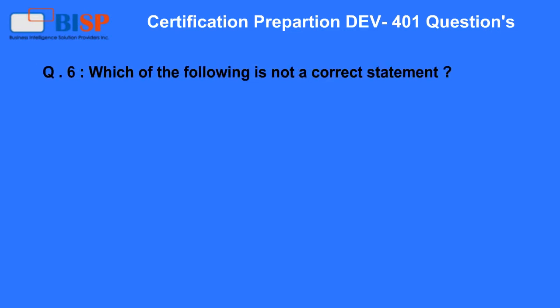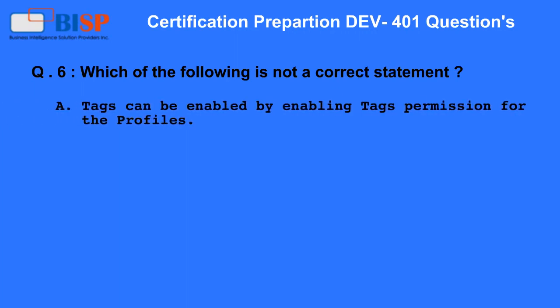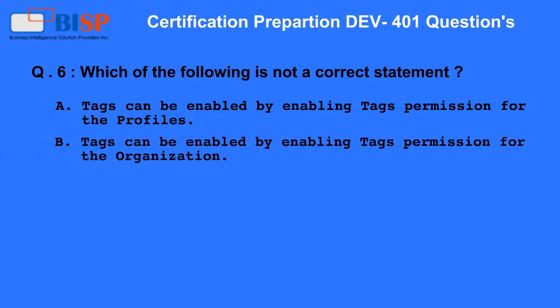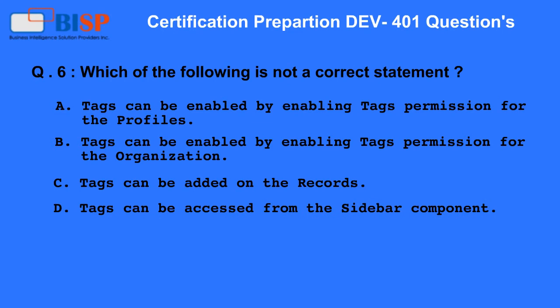Question 6. Which of the following is not a correct statement? A. Tags can be enabled by enabling tags permission for the profiles. B. Tags can be enabled by enabling tags permission for the organization. C. Tags can be added on the records. D. Tags can be accessed from the sidebar component.